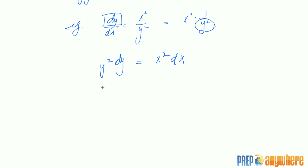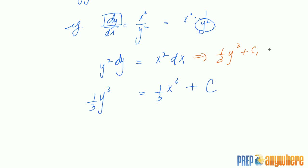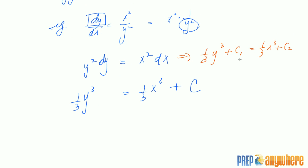Let's find the antiderivative of both sides. We get 1/3 y cubed on the left and 1/3 x cubed on the right, plus a constant. There's an intermediate step where you get a constant on both sides, and bringing one over gives c₂ minus c₁, which we just call c.